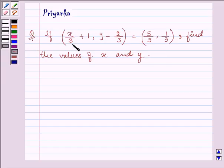It says, if x by 3 plus 1 comma y minus 2 by 3 is equal to 5 by 3 comma 1 by 3, find the values of x and y.